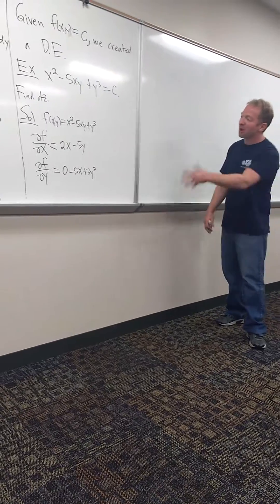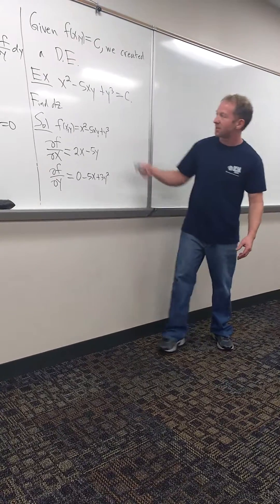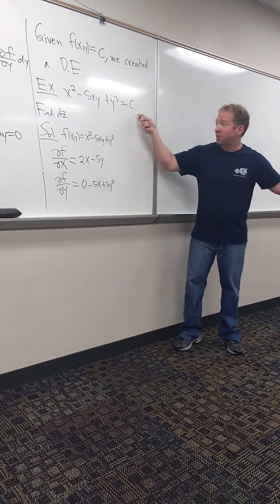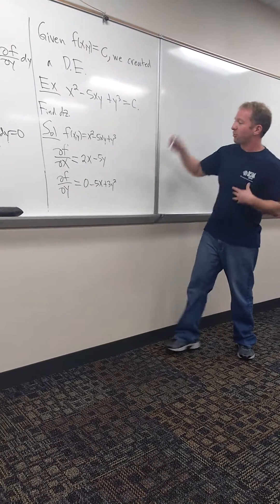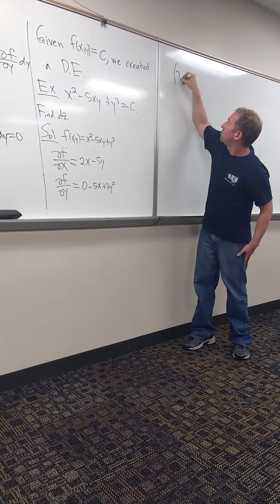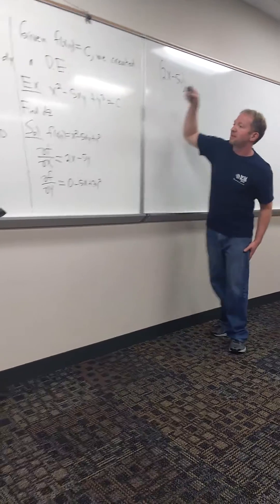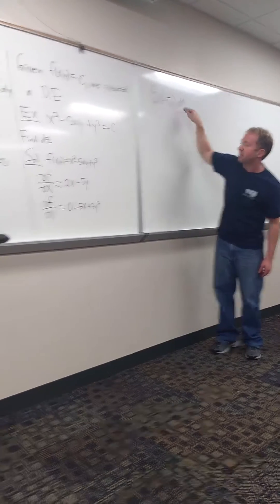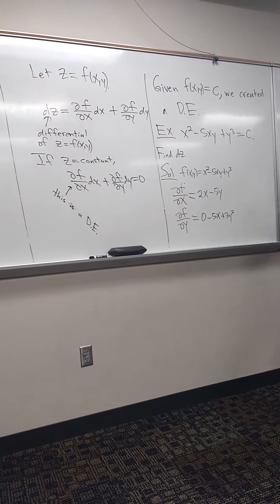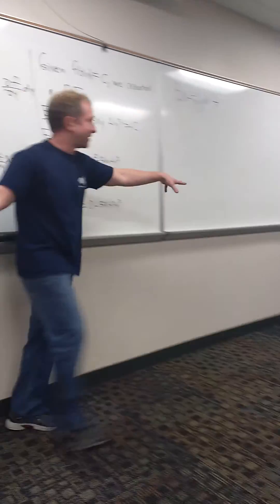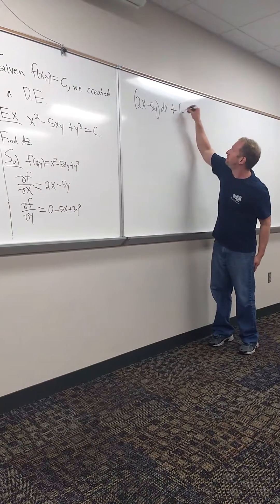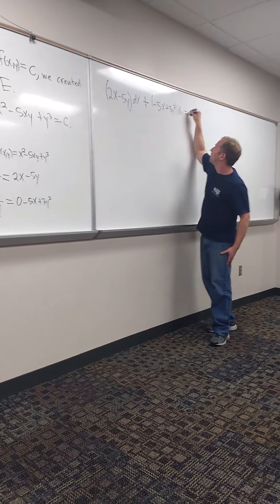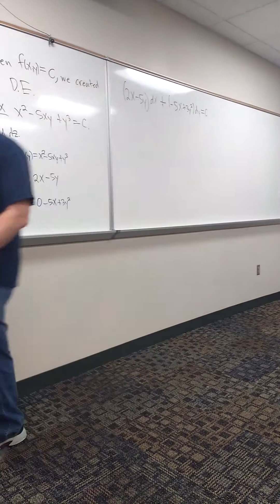Almost done. Almost done. So now we can write down the total differential. Right? It's dz. But dz. What's dz in this case, actually? It's zero. Right? Yeah. Good. It's zero. I'll write the zero on the right-hand side. So it's del f del x. So 2x minus 5y. And then it's dx. Right? That's del f del x dx. Del f del x dx. Plus. Plus. Now which one do we write next? Del f del y. Yeah. Del f del y. Good. So it's minus 5x plus 3y squared. Plus 3y squared. And then it's dy. And it's equal to? Zero. Zero. So we created a dE. Right? We created a dE one more time.